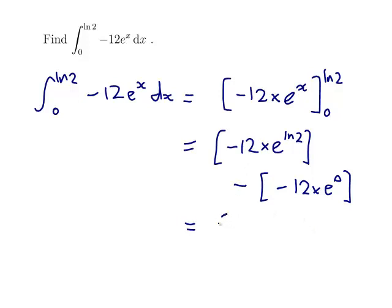We get -12 times... now e^(ln 2) is 2 because the e and the ln cancel each other out. And e^0 is 1.